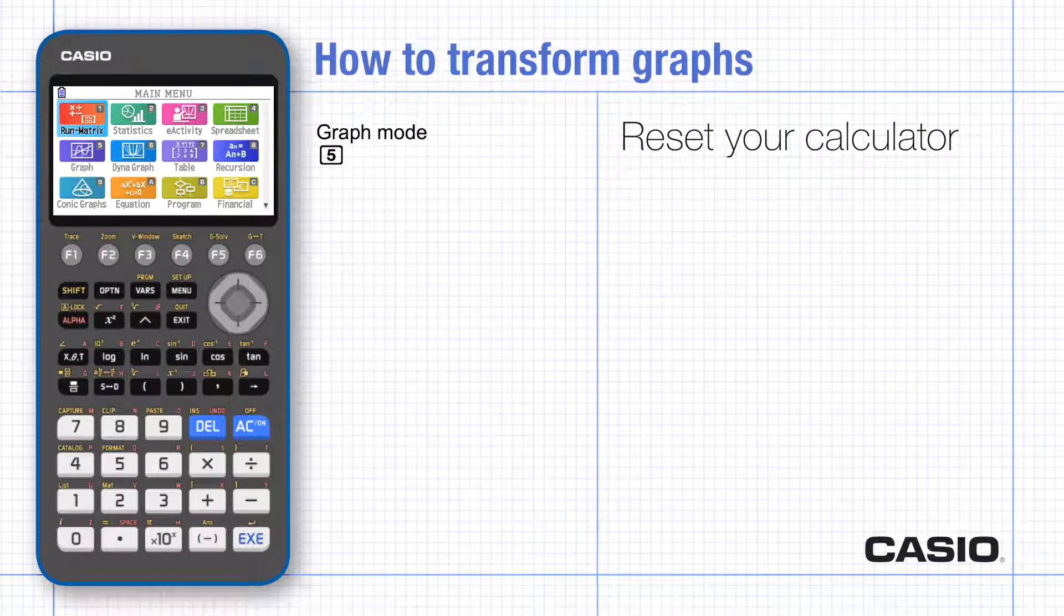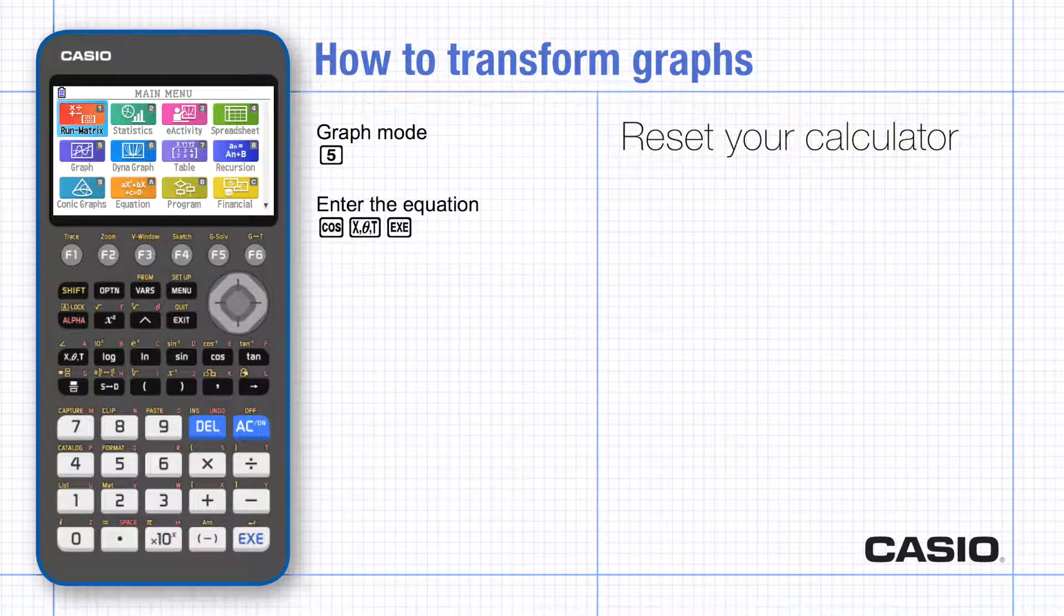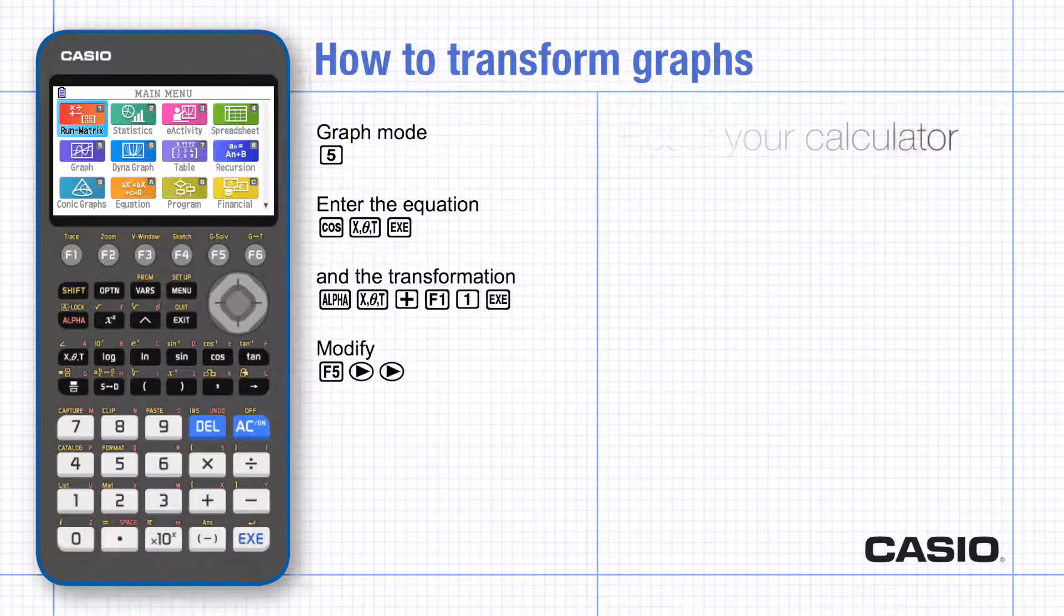You can use any graph you like as y1 and see how the transformation works on other graphs also. To work along with this tutorial you'll find it easiest to reset the calculator before starting so your screen matches the one in the video. With the default settings the angle type is set in radians.